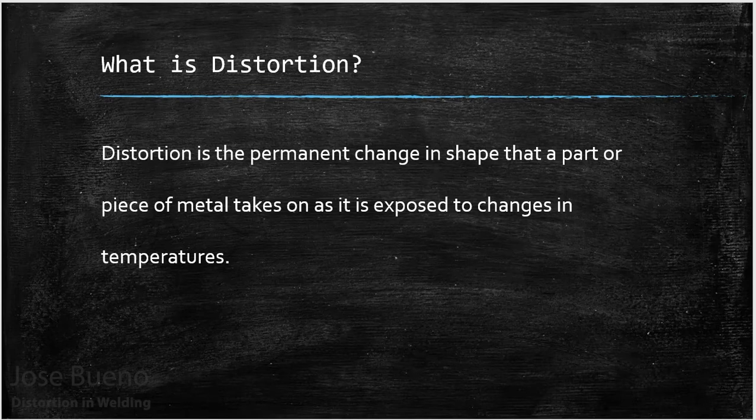Before we start talking about what causes distortion and how to prevent it, we need to understand what distortion actually is. When we're welding a piece of metal, as we're applying heat and it's cooling down, it's going to grow in size — basically expand — and then as it cools off, it's going to contract or return to its original size. Sometimes it can change shape and take on a permanent deformity. Once this happens, this is what we call distortion.